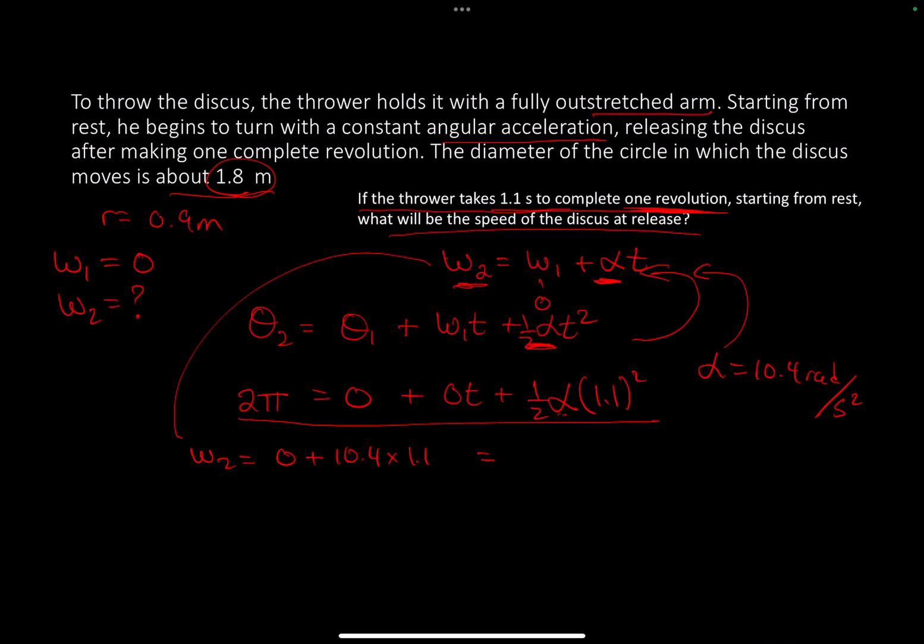So the angular speed w2 equals 11.4 radians per second.